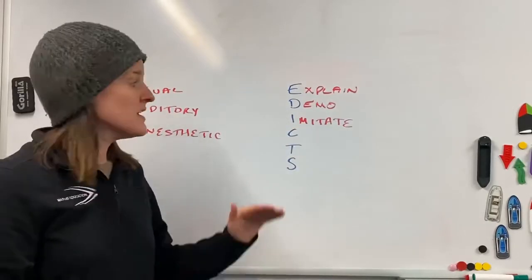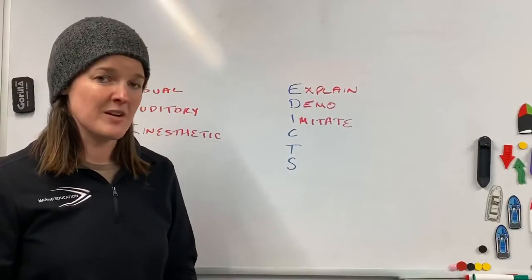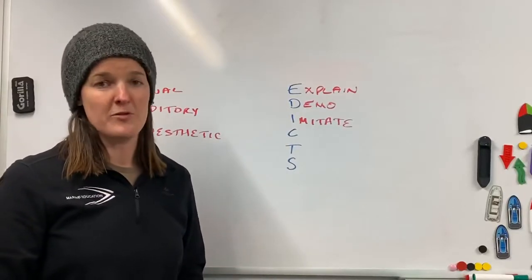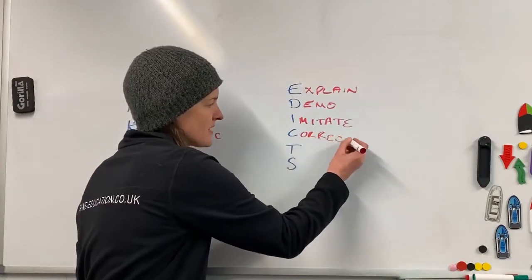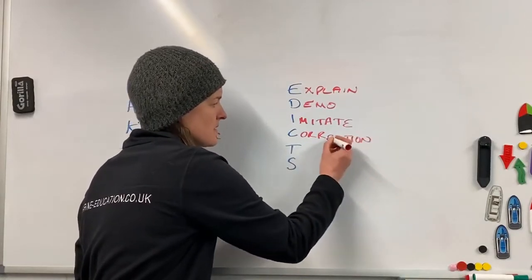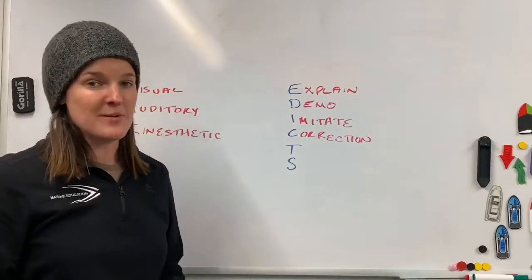Once they've had those two or three goes, you're going to be keeping an eye on them, and you're going to need to offer them some kind of correction. The C is for Correction, often top tips basically to get better.